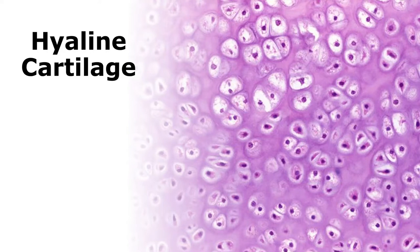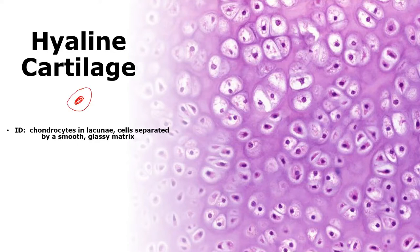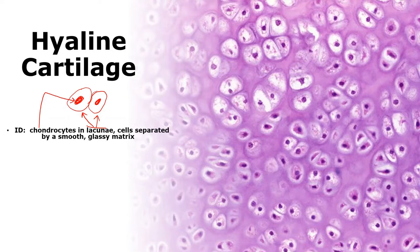Hyaline refers to something glassy. One of the tricks I use when I see this tissue is stained glass — it kind of looks like a stained glass window. What you're seeing is a swimming pool with a darker-stained object in the center. Those are lacunae, the white structures holding chondrocytes — the cartilage cells. Think of the lacunae as a swimming pool with a chondrocyte floating in it.